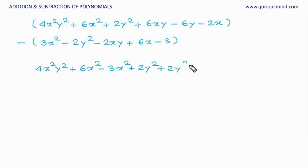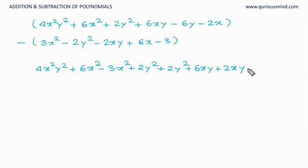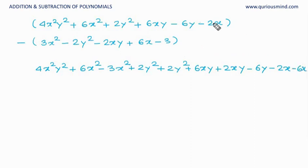Plus 6xy — is there a like term for xy? Yes, minus 2xy, but minus and minus gives plus, so plus 2xy. Then minus 6y — nothing with y in the other expression, so we keep it. Then minus 2x — here it is 6x; plus and minus gives different signs, so minus 6x. Finally, nothing remains in the first expression, but minus 3 is left in the second; minus and minus gives plus 3.